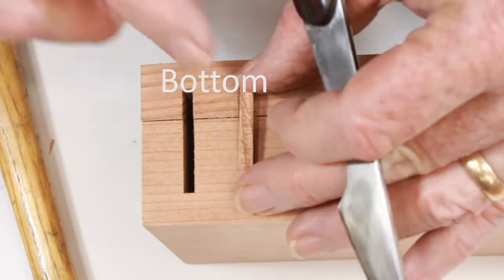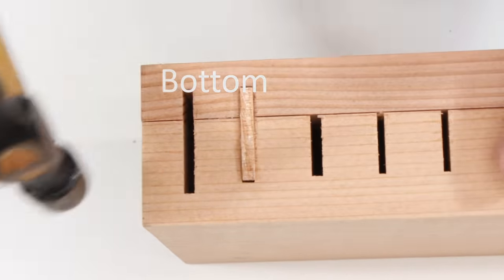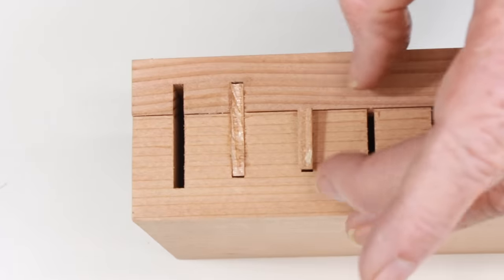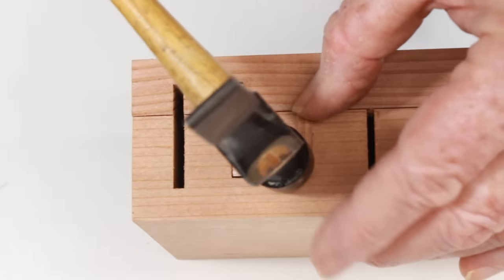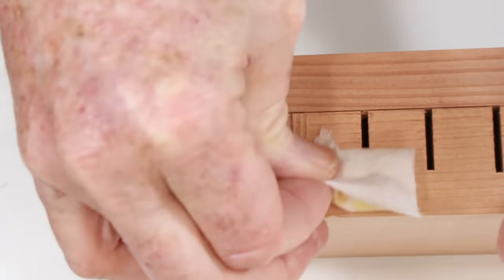Two of the slots are quite a bit deeper than the others, so I cut matching kerfs in the thinner board. Then I glued the two boards together. Several of the slots need to be plugged at the bottom. I cut some thin strips from a piece of scrap and anchored them with a dab of glue. They're not really under any stress at all, and they're not visible.